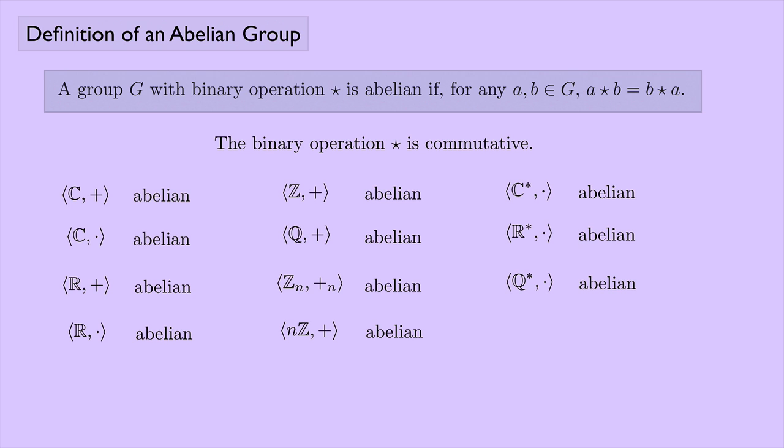You might start thinking that maybe all groups are abelian, or most of them at least. But there are a lot of examples of non-abelian groups. Where do we see something that's not commutative? One of the most common areas is matrix multiplication. So maybe we can make a group out of matrices with the binary operation being multiplication, and that should give us a non-abelian group.